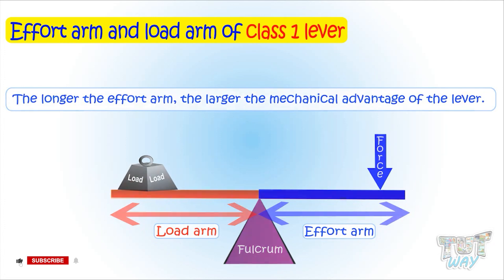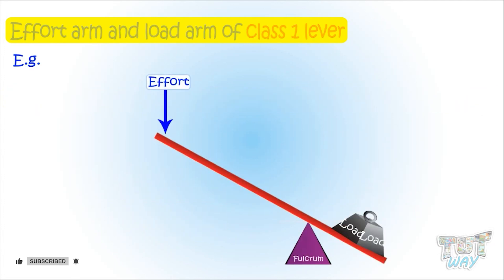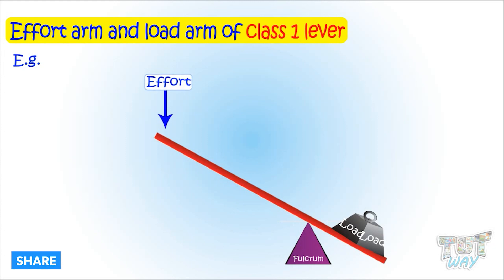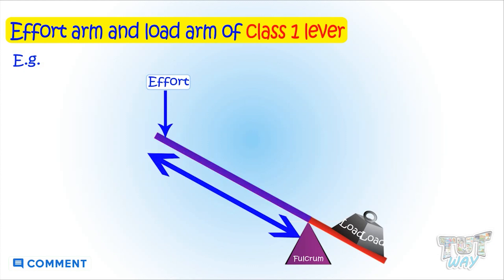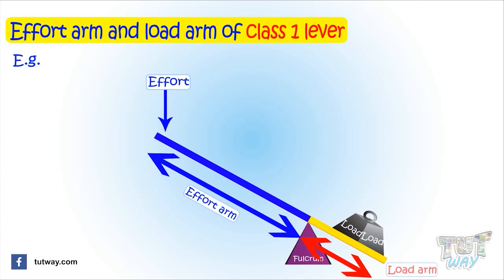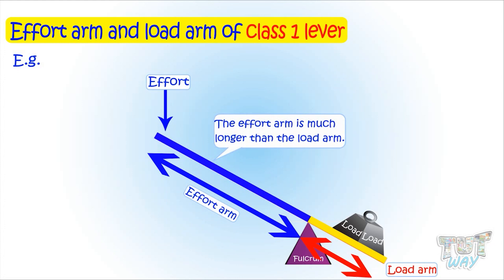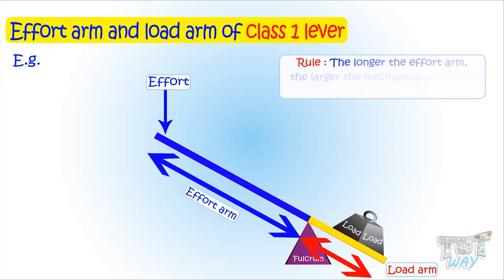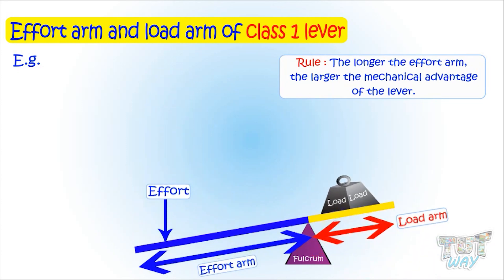Now let's learn it with examples. Here we have a class 1 lever. This point is the effort, this is the fulcrum, and this is the load. The effort arm is the distance between the effort and the fulcrum — so this much is the effort arm. The load arm is the distance between the load and the fulcrum — so this much is the load arm. You can clearly see that the effort arm is much longer than the load arm, so this lever will give a large mechanical advantage.